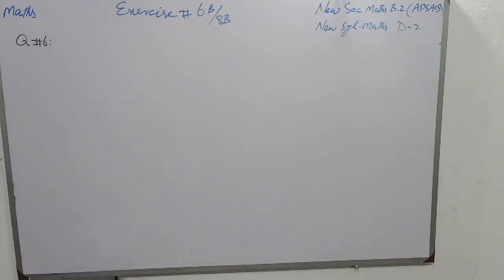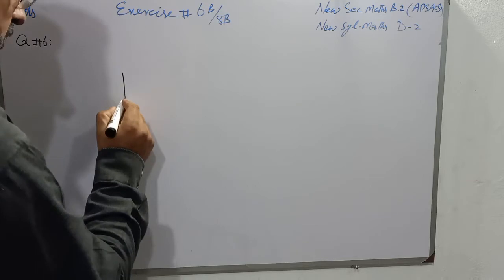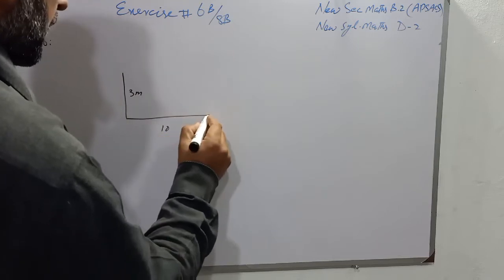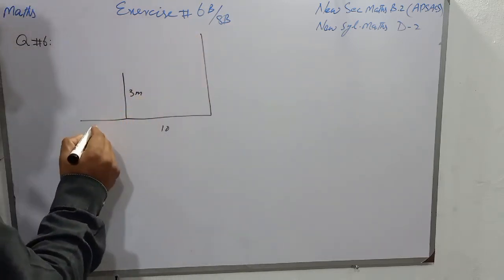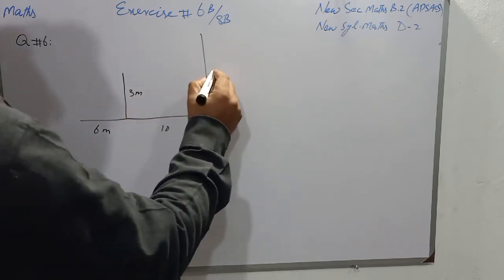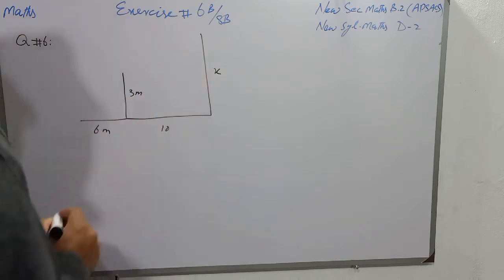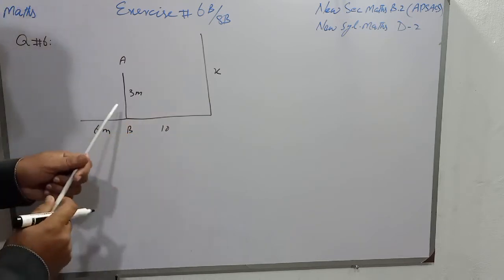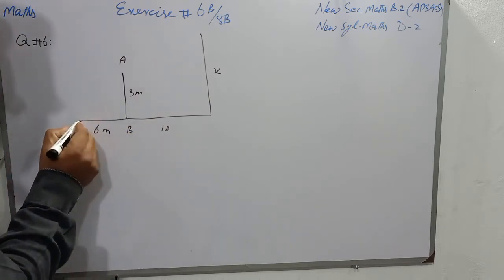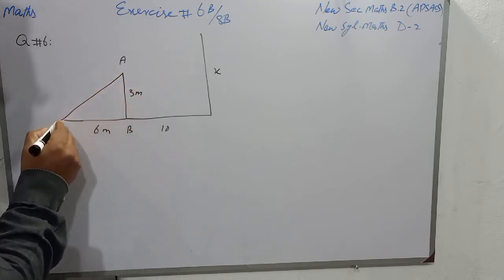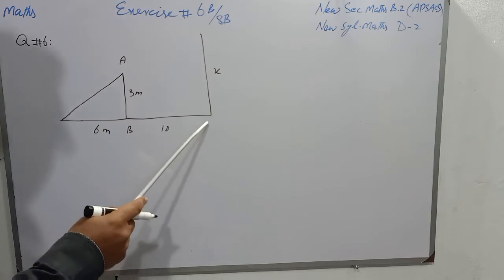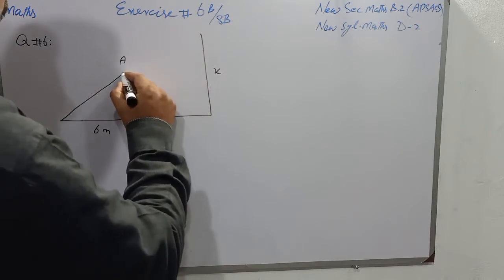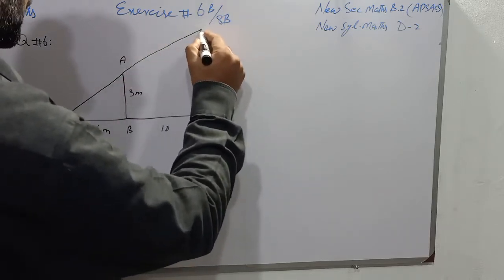Question 6 is: there is a pole of height 3 meters, placed 10 meters away from a standing lamp, and it casts a shadow of 6 meters. We have to find the height of the lamp.